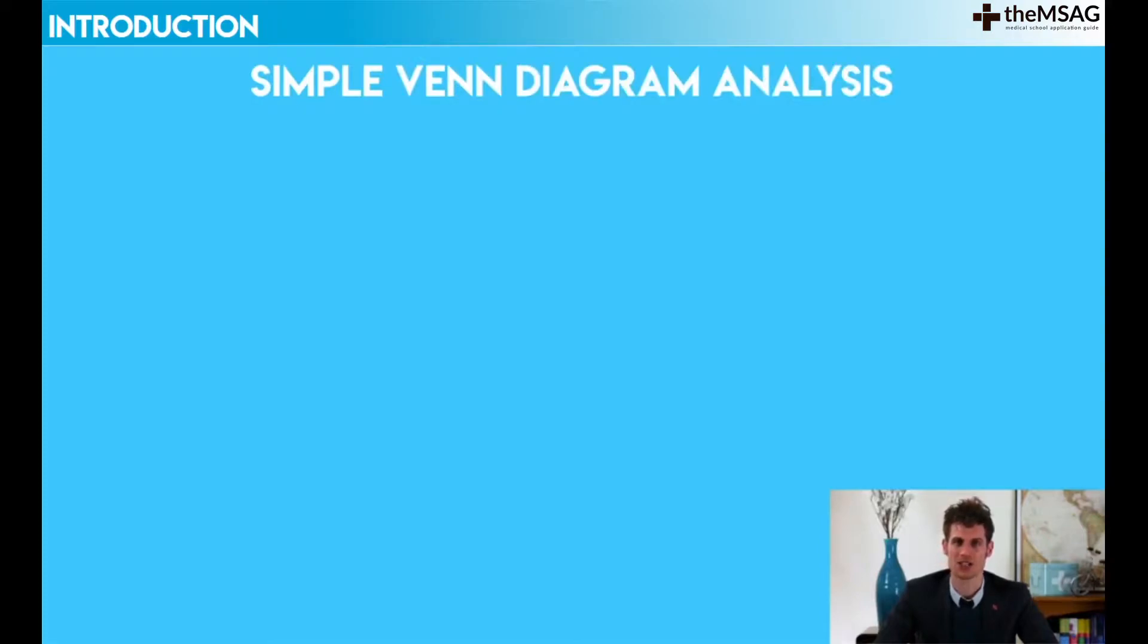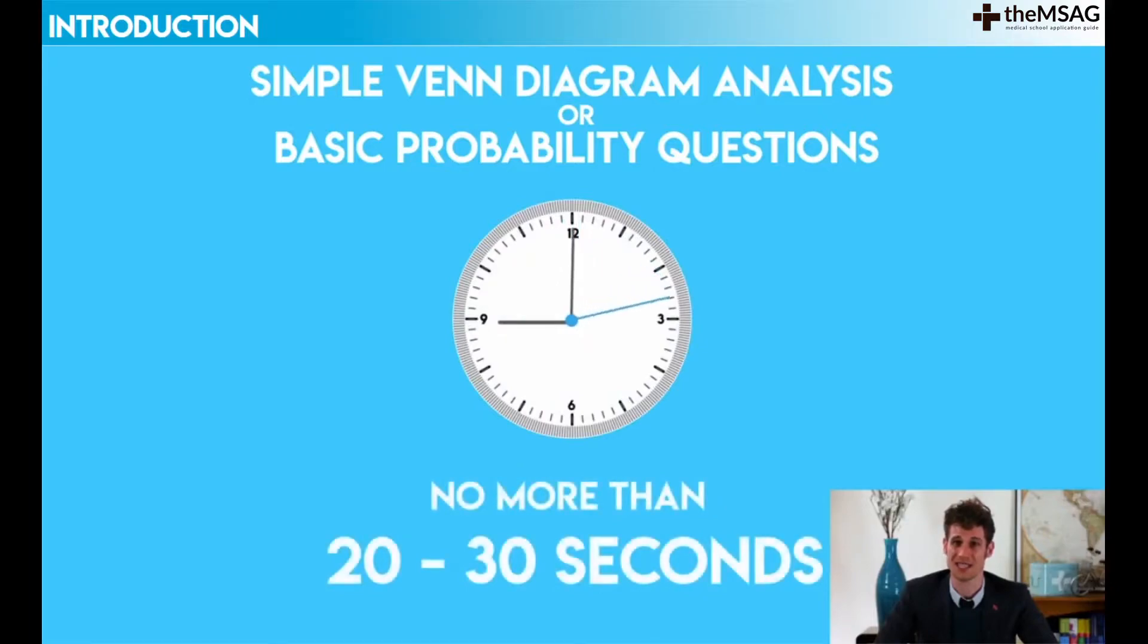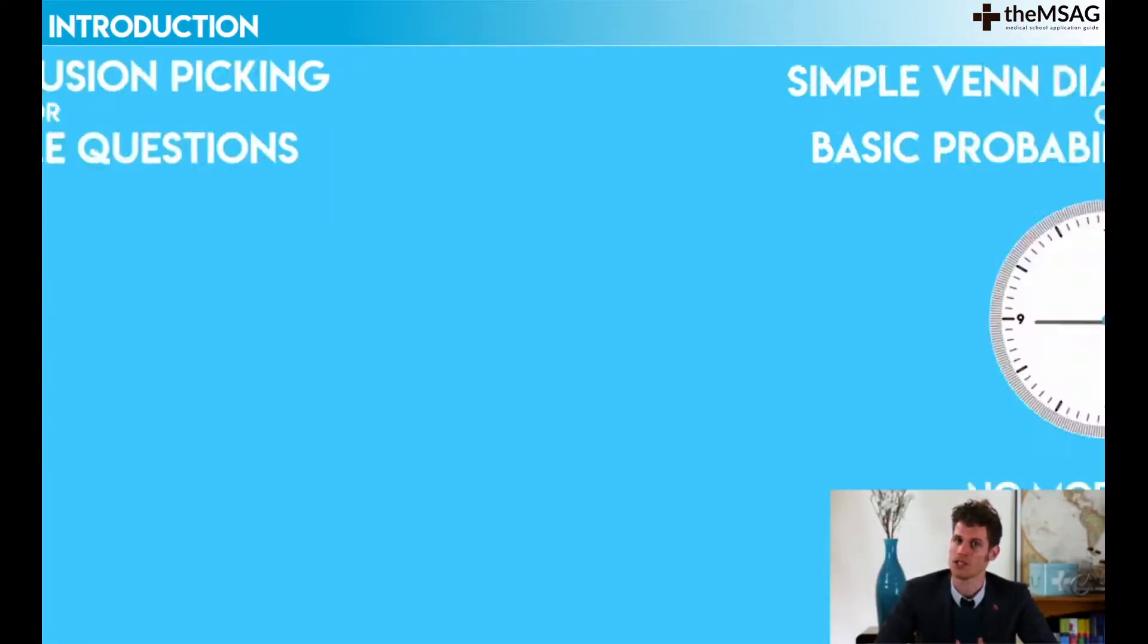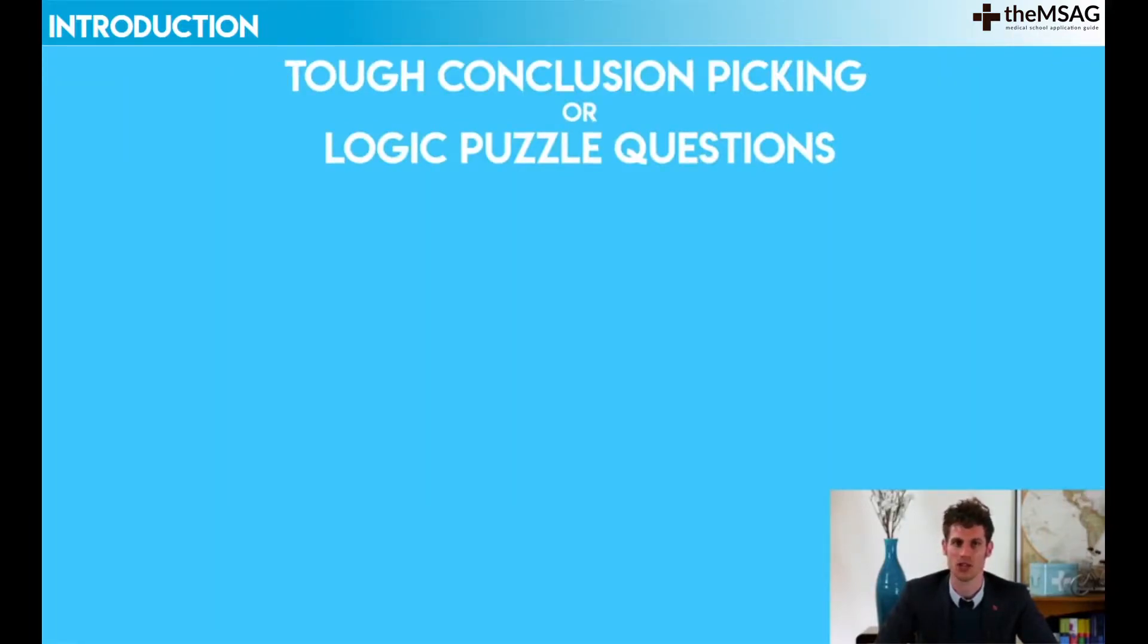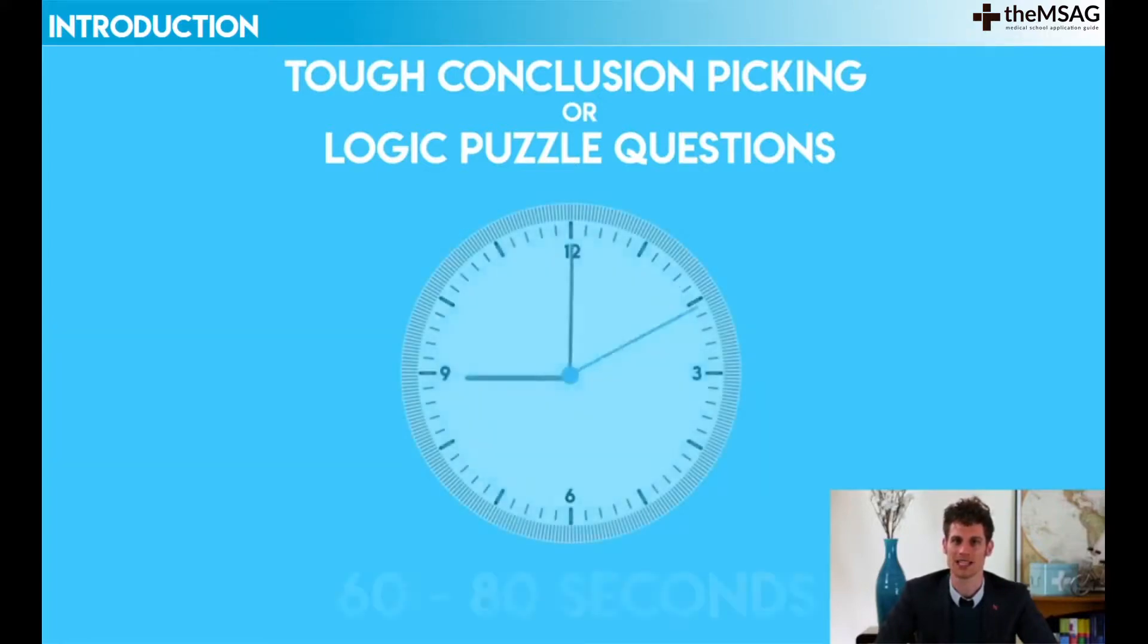For simple Venn diagram analysis or basic probability questions, you should probably be spending no more than 20 to 30 seconds per question. But for tough conclusion picking or logic puzzle questions, you will be spending more like 60 to 80 seconds per question.